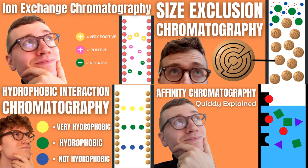The four main types of LC are partition chromatography, ion exchange chromatography, size exclusion chromatography, and affinity chromatography. You can find all four of these chromatographies in my protein purification playlist linked by the end of this video.